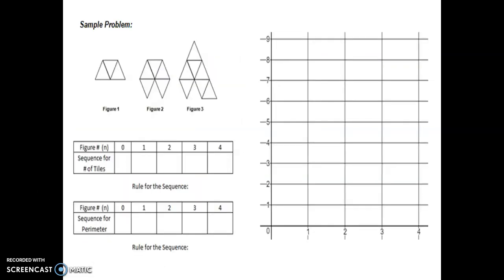So here's the sample problem. We have this pattern. Our goal is to make two sequences from it. In this first table we're going to make a sequence for the number of tiles and in the second table we're going to make a sequence for the perimeter. So let's begin with the number of tiles. In figure one we can clearly see is made up of one, two, three triangle pieces. So three tiles. So we're going to put in figure number one, three tiles.